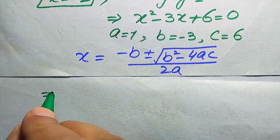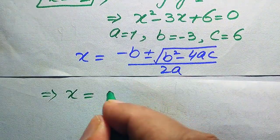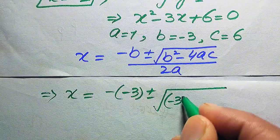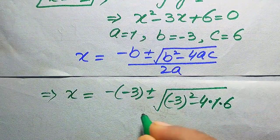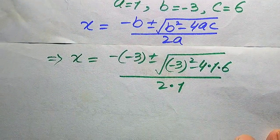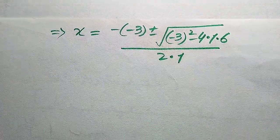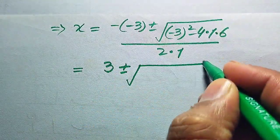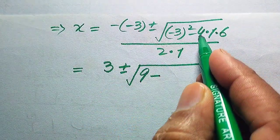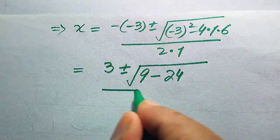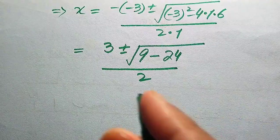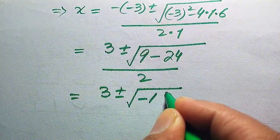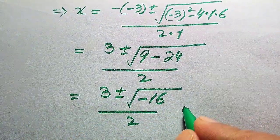Substituting the values: x equals negative of (minus 3) plus or minus square root of (minus 3) squared minus 4 times 1 times 6, divided by 2 times 1. This simplifies to 3 plus or minus square root of (9 minus 24) divided by 2, which gives 3 plus or minus square root of minus 15, divided by 2.